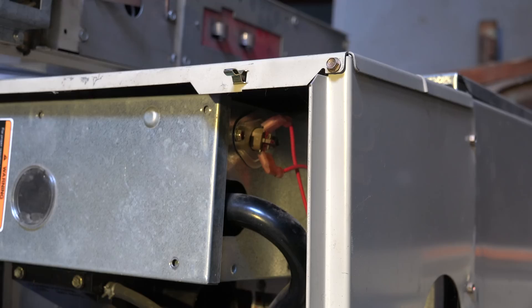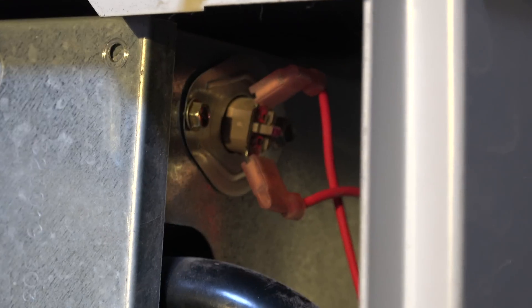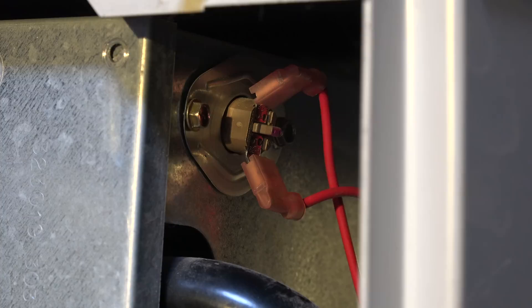Now here is a third example of a rollout switch. You can see the button in the center of it. Interesting thing about this one: this one's not a factory replacement rollout switch. That is an aftermarket switch that was placed in there. It's the incorrect switch for this furnace.